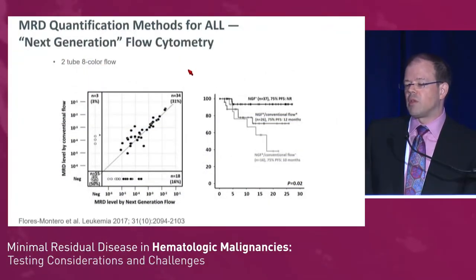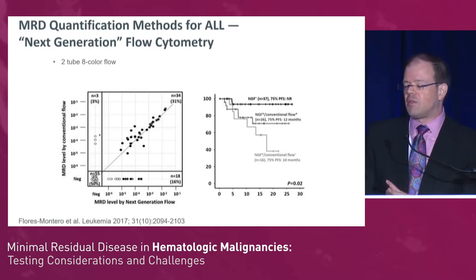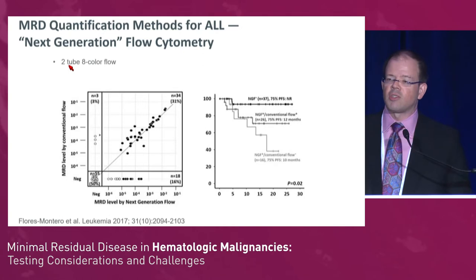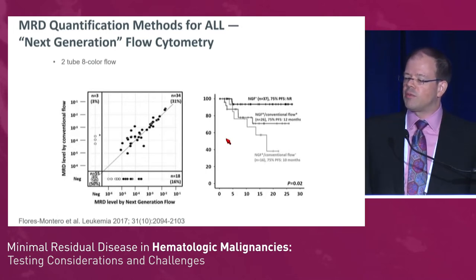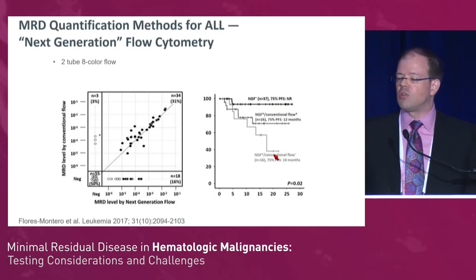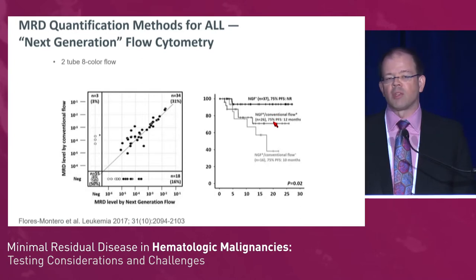There have been improvements in flow cytometry, specifically next-generation flow cytometry, which pushes sensitivity down to 10 to the minus 5. This approach has been compared to standard flow cytometry in ALL, and shows patients with disease burden considered negative by conventional flow are detectable by next-generation flow, which uses two tubes requiring even more bone marrow aspirate. Next-generation flow is more predictive for outcome — patients with MRD less than 10 to the minus 5 have the best outcome, while those negative by conventional flow but positive by next-generation flow have an outcome worse than those negative by both.